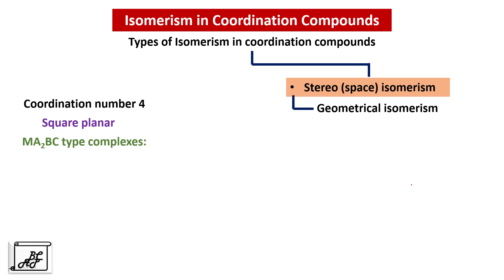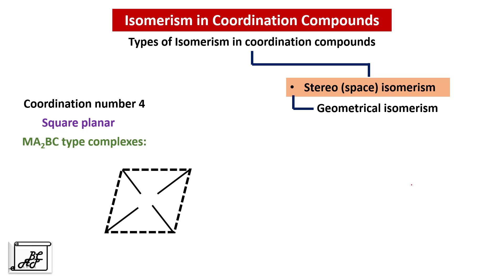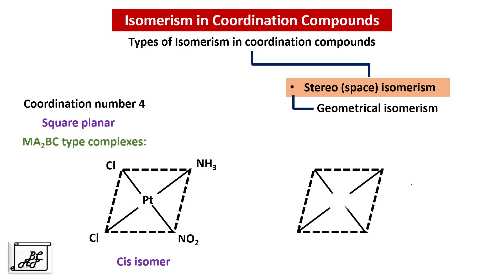Let us see the next example, MA2BC type complexes, where two ligands are the same and the third and fourth ligands are different. In such cases, we look at the two similar ligands to see whether they are on the same side or opposite side. Here the two chlorine atoms are on the same side — this is a cis isomer. The trans isomer of this compound will have two chlorine atoms opposite to each other. In this way we can identify the cis-trans isomers.